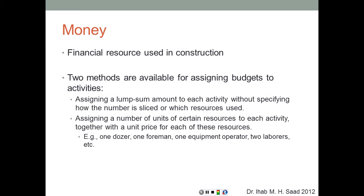Money is the financial resource in construction. Two methods exist for assigning budgets to activities: assigning a lump sum per activity without specifying which resources are used, or assigning specific quantities of resources with unit prices. For example, an activity costing five thousand dollars could itemize one bulldozer, one foreman, one equipment operator, two laborers, etc., and knowing their hourly rates and durations, the total can be translated into money.